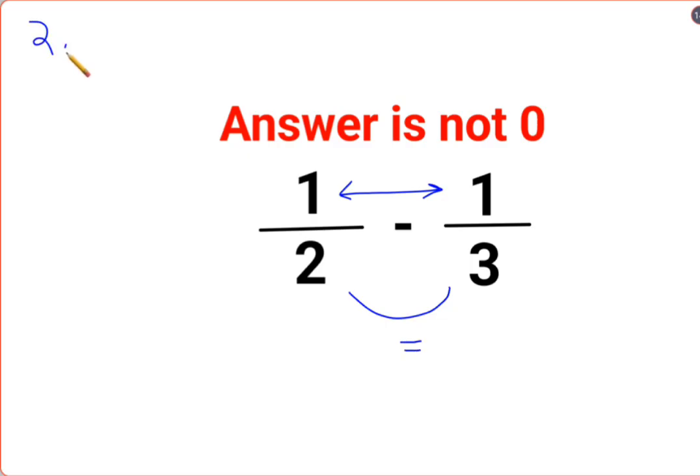See, basically 2 and 3. Whatever numbers you get in your denominator, you just have to find the LCM of those denominators. Now 2 and 3 both are prime, so the LCM comes out to be their product which is 6.